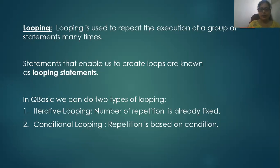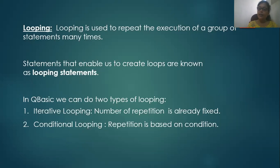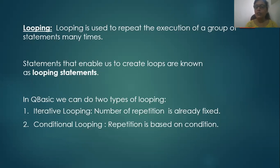In QBasic we can do two types of looping. The first is iterative looping and the second is conditional looping. Iterative looping is where the number of repetitions is already fixed — you know that you have to execute these statements five times, ten times, or a hundred times. Such types of looping are considered iterative looping.